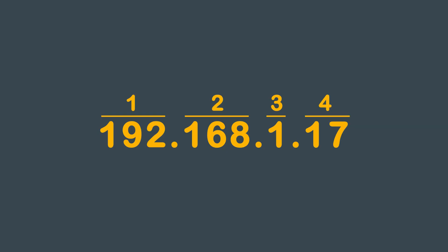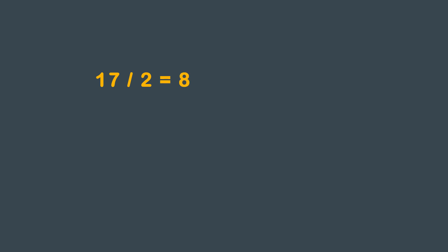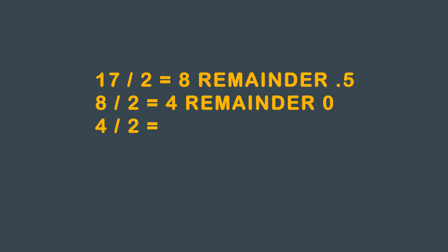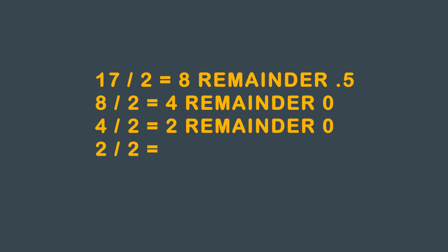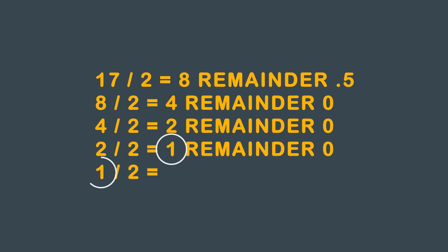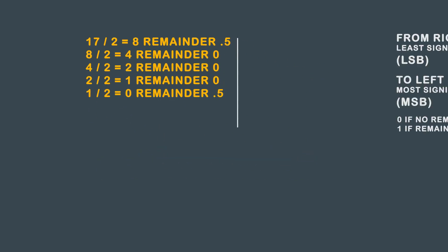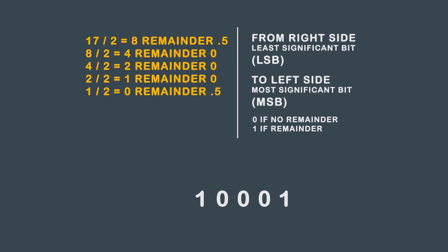The last octet in the address is 17. Take 17, divide that by 2, you get 8 and the remainder is 0.5. Take 8, divide that by 2, you get 4 and there's no remainder. Take 4, divide that by 2, you get 2 and there's no remainder. Take 2, divide that by 2, you get 1 and there's no remainder. Take 1, divide that by 2, you get 0 and there's a remainder of 0.5. Working from the LSB to the MSB, you get 1, 0, 0, 0, 1.